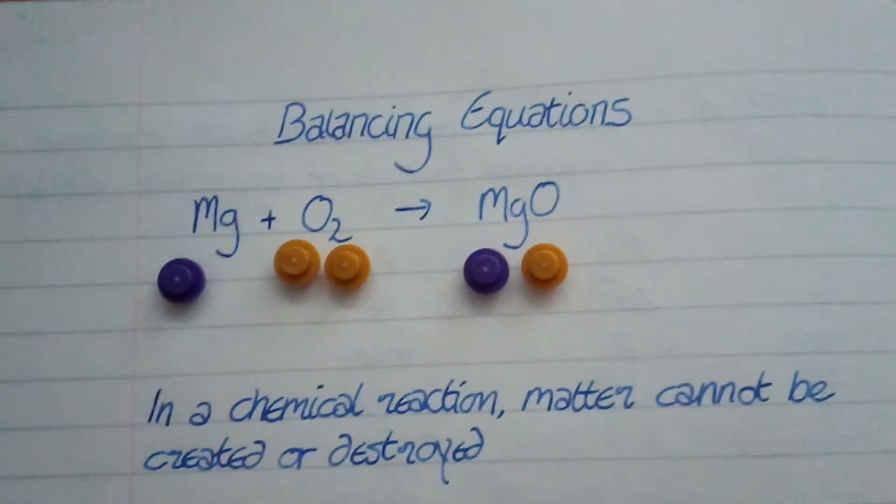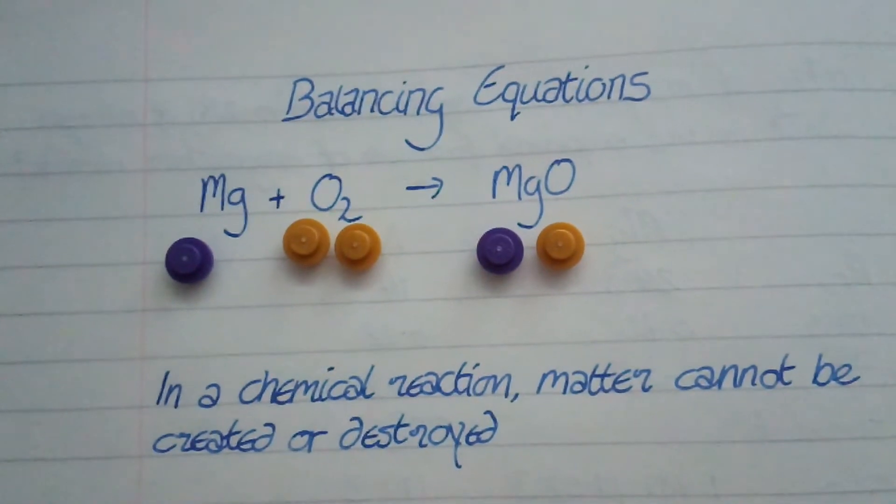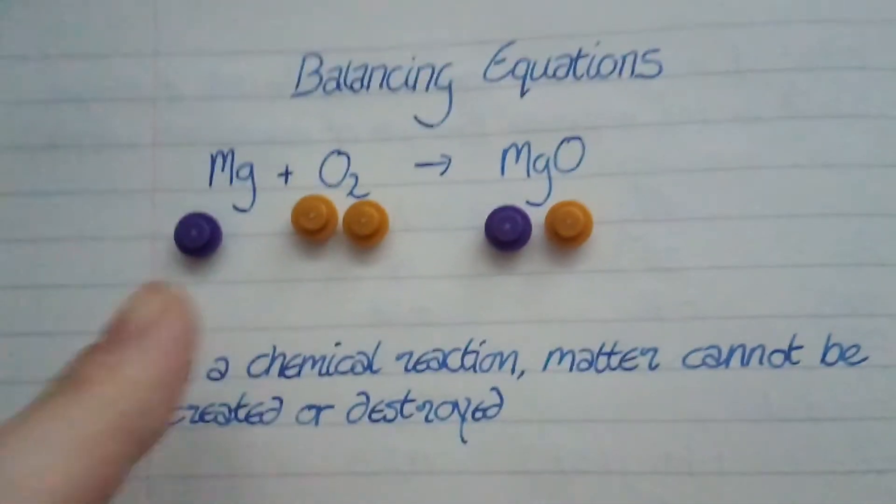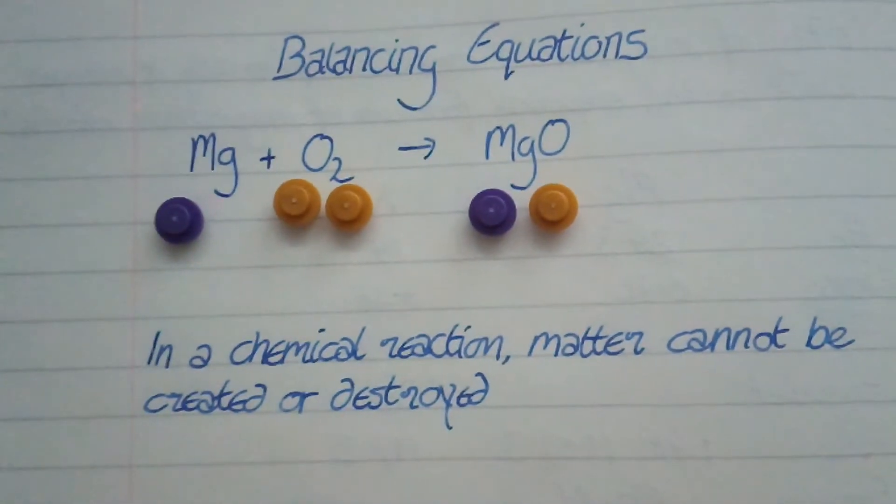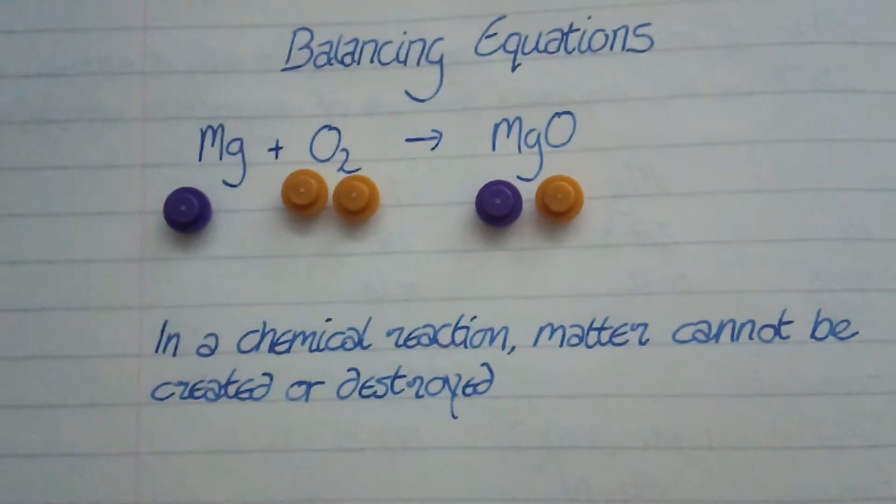Now, the rule is everything on each side of the arrow has to balance, has to be the same. So I've got one purple on each side. That's fantastic. That's what I need. But my golds, my oxygens, that's not working. Oh, no.